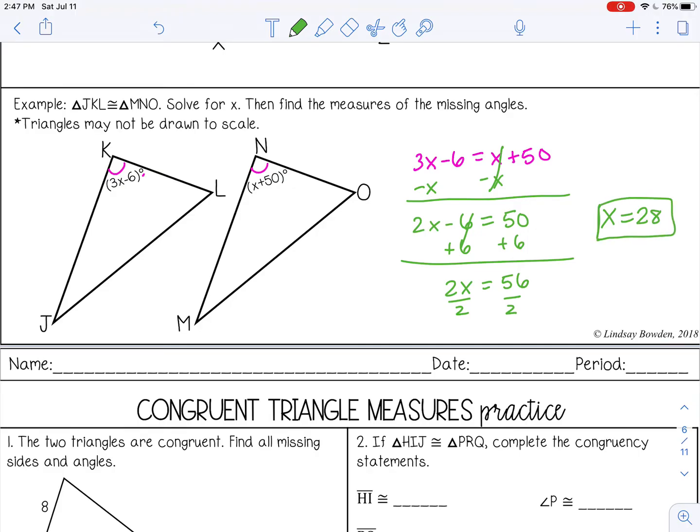Then I need to substitute 28 in for x into both expressions to get the actual degree measure for the angles. So 28 plus 50 gives me 78 degrees, and I know these are the same. You may want to check just to make sure you didn't make a mistake, but they should both be 78 degrees.